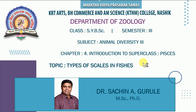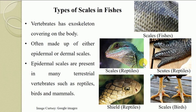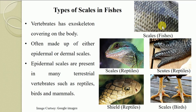Let us see the types of scales in fishes. The body of all vertebrate organisms has an exoskeletal covering, often made up of either epidermal scales or dermal scales. As you can see in this diagram, scales are of two origins — epidermal or dermal. Whatever scales are present in fishes, these are dermal in origin, meaning they originate from the dermis.